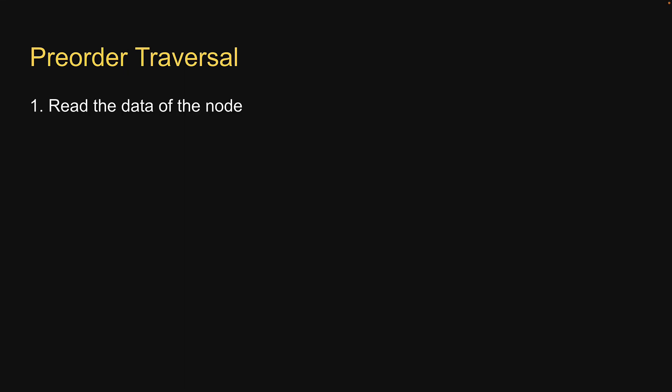Let's begin with pre-order traversal. The algorithm for pre-order traversal is as follows: read the data of the node, visit the left subtree, visit the right subtree. Let's understand these steps with an example.